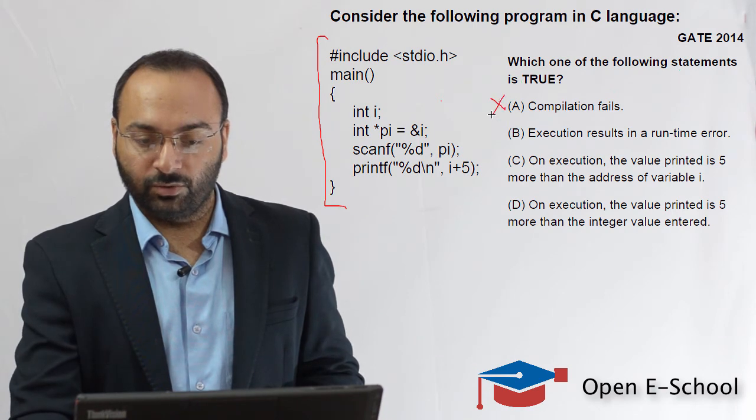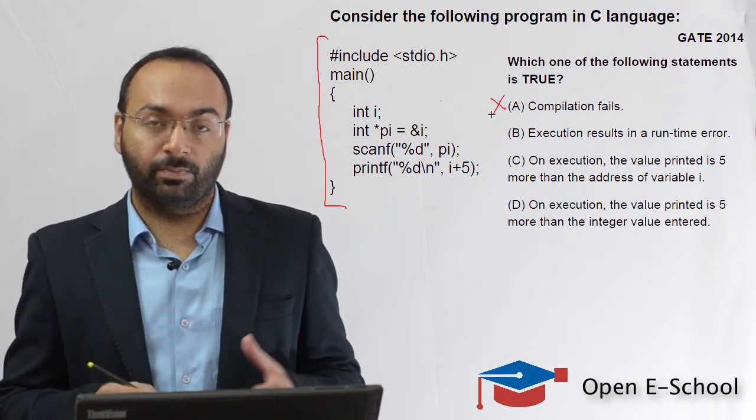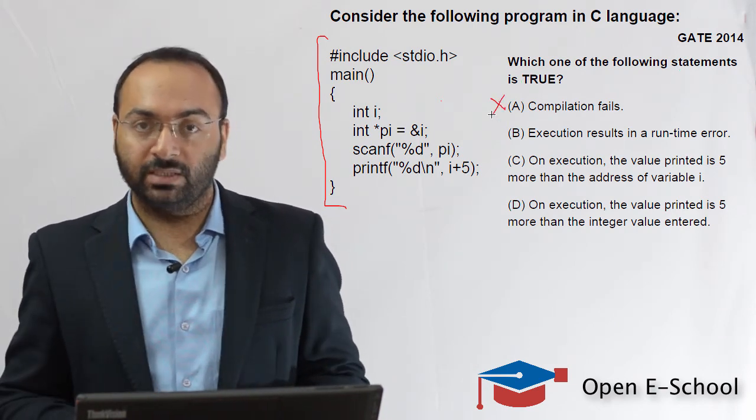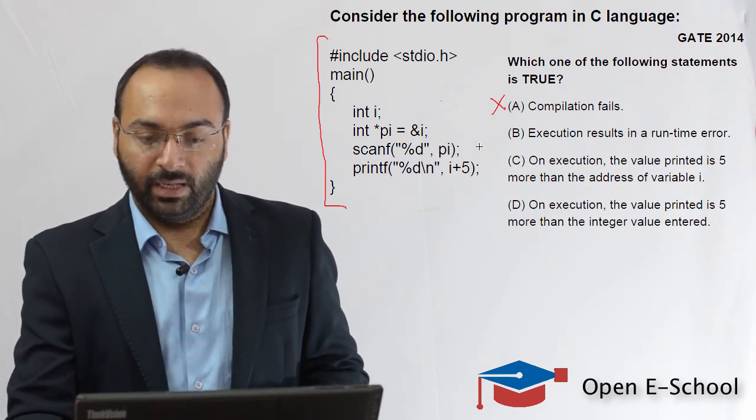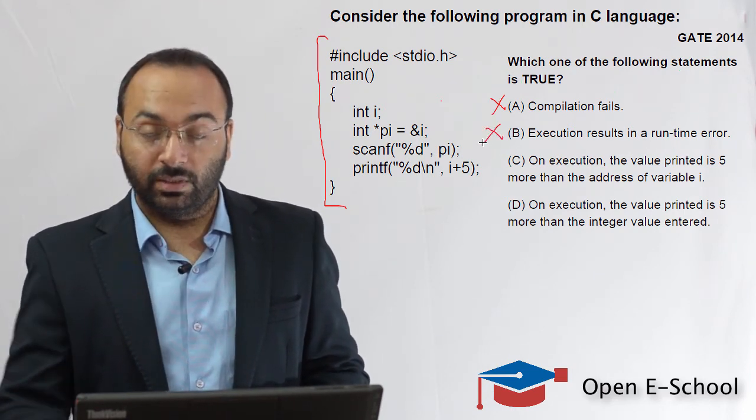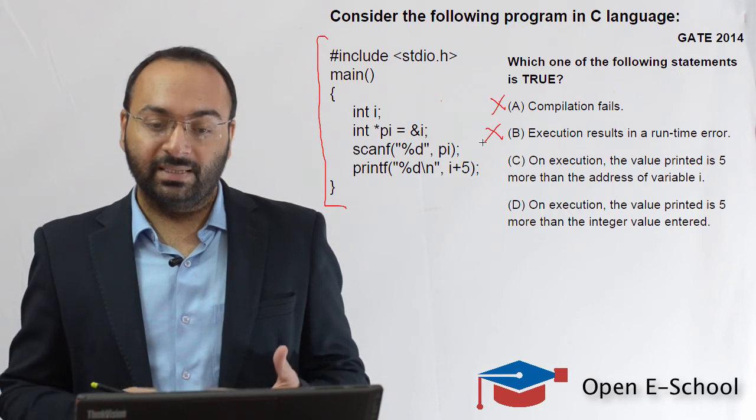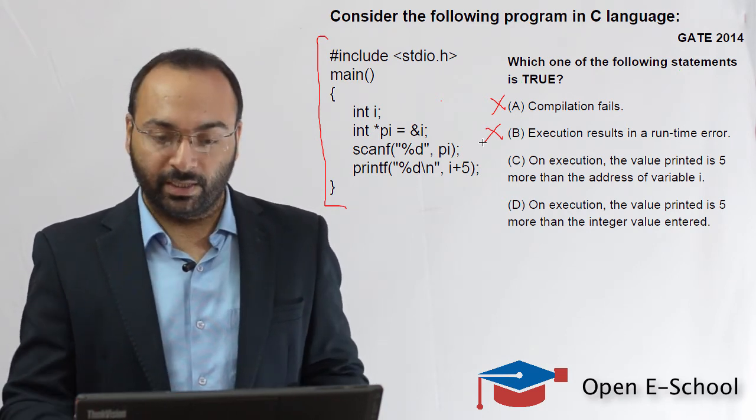So the first statement is wrong. It says that this program fails compilation. You just noticed that the program compiles okay. The second statement is also false. It says there is an execution error, but there is no execution error.